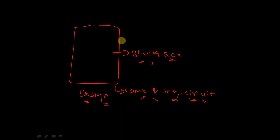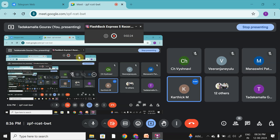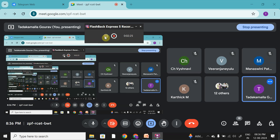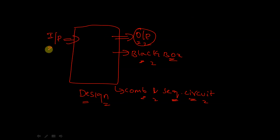This type of design will produce some particular output. So this is our black box — it may be made up of any combinational and sequential circuits — and from this we are getting some particular output. We are also giving some particular input to this black box.